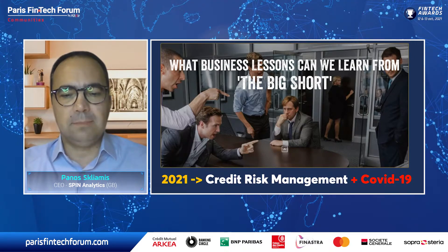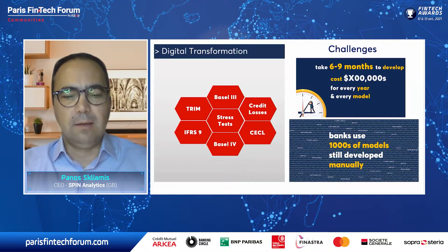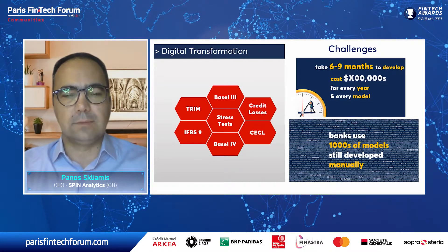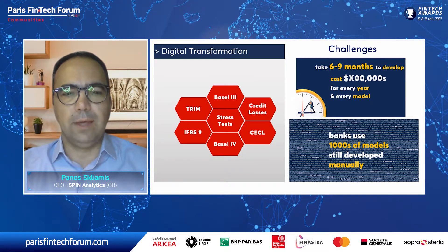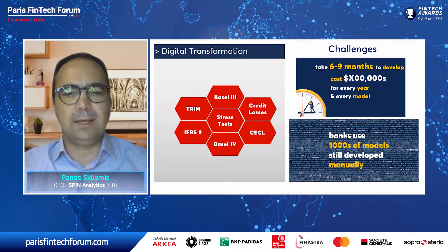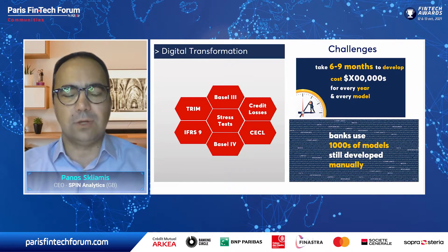Today, credit risk management has become a major priority for the global banking industry. Behind every loan or credit product, there is one or more credit risk models. The big challenge is how to develop fast, high-quality credit risk models. Banks use thousands of models which are still developed manually due to the expert judgment required. The average time for an experienced banking team to develop a full model is between six to nine months, and the average cost is at least €300,000 for every model.